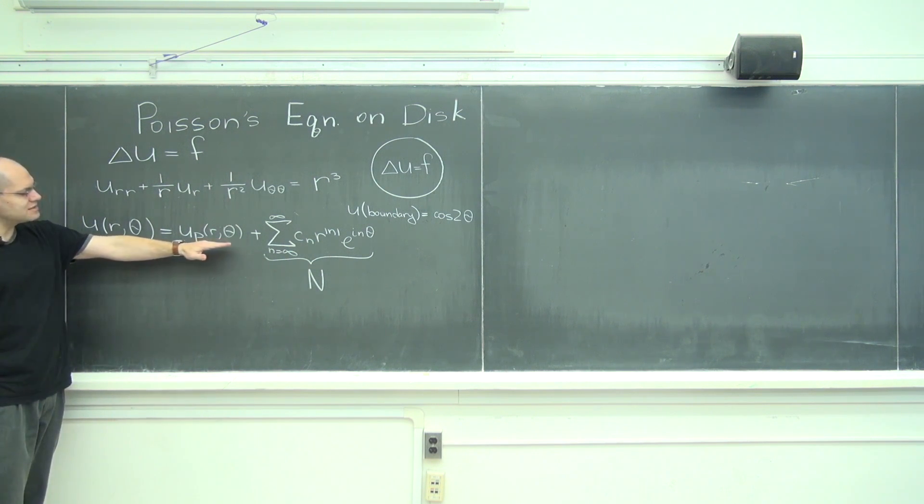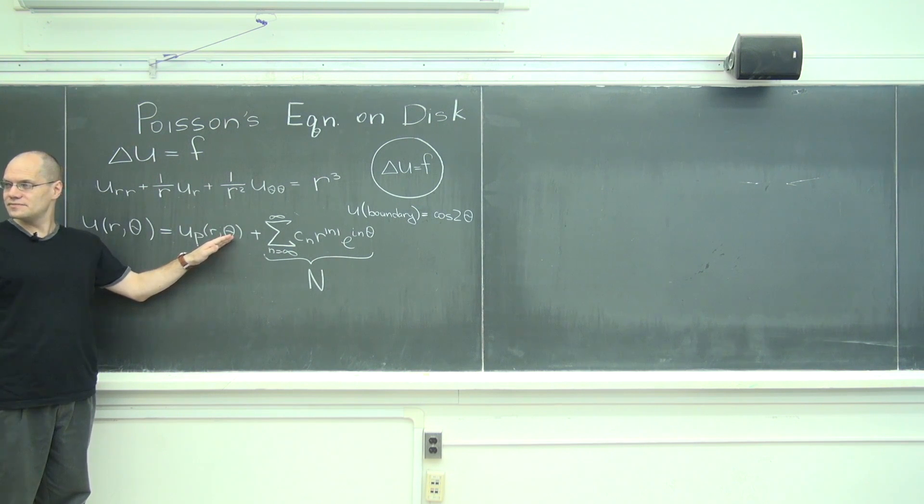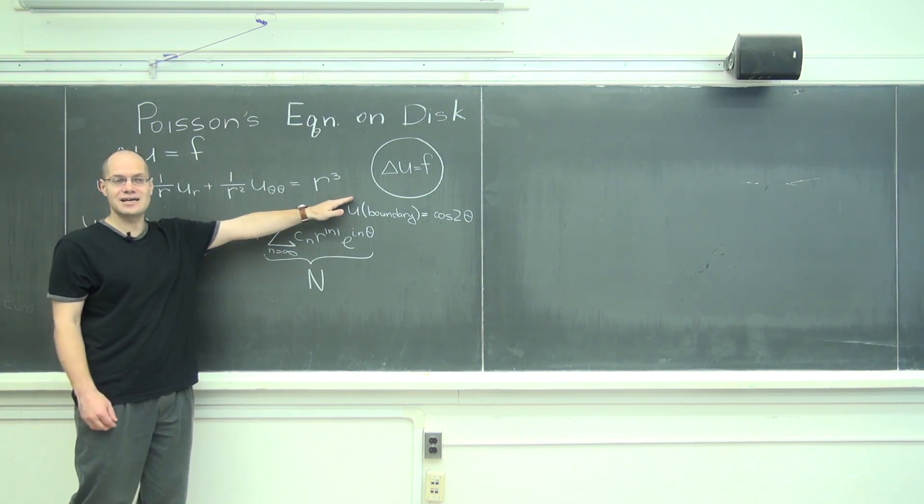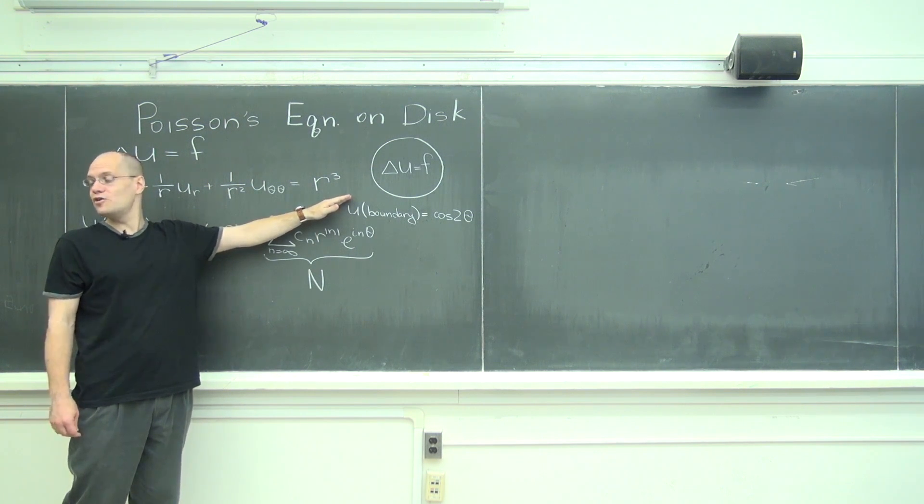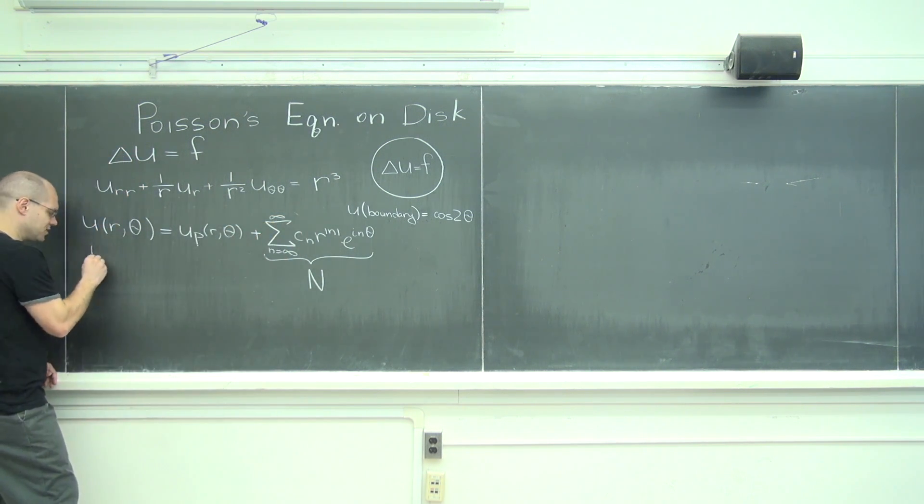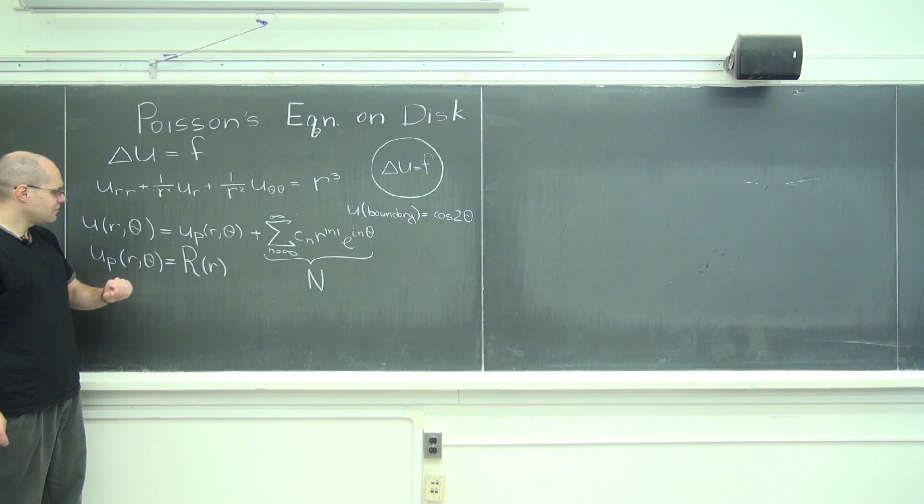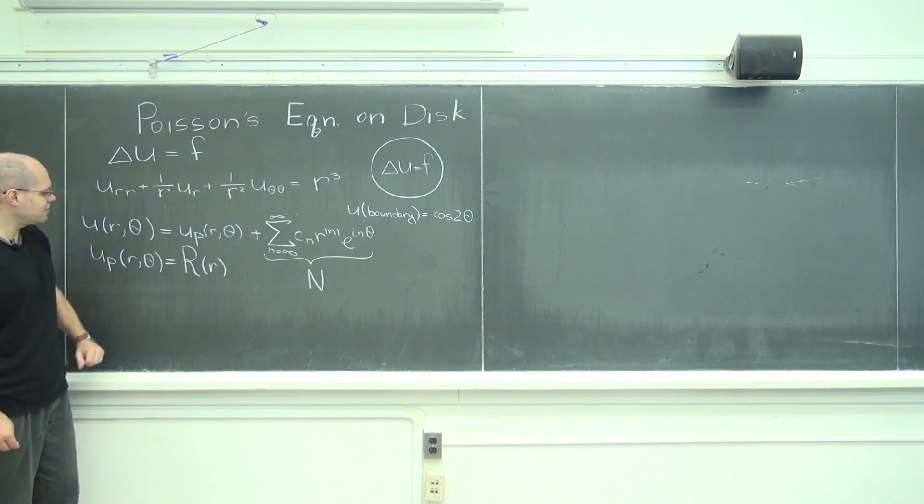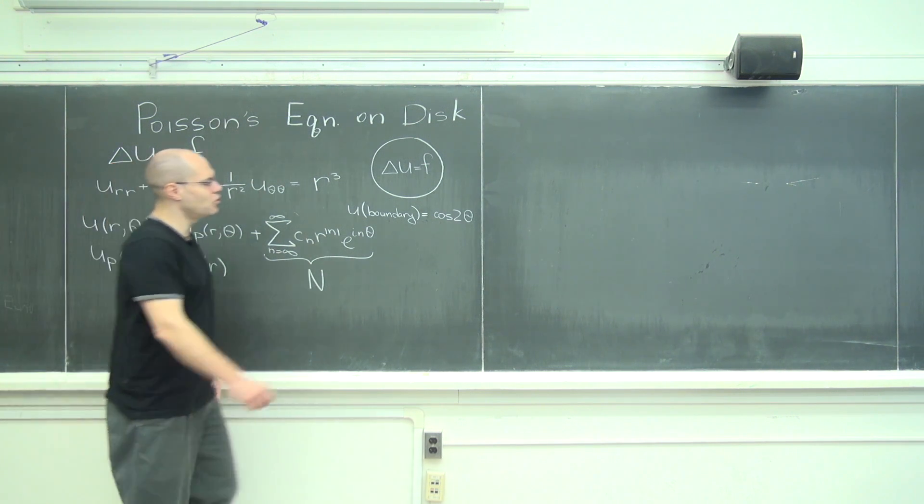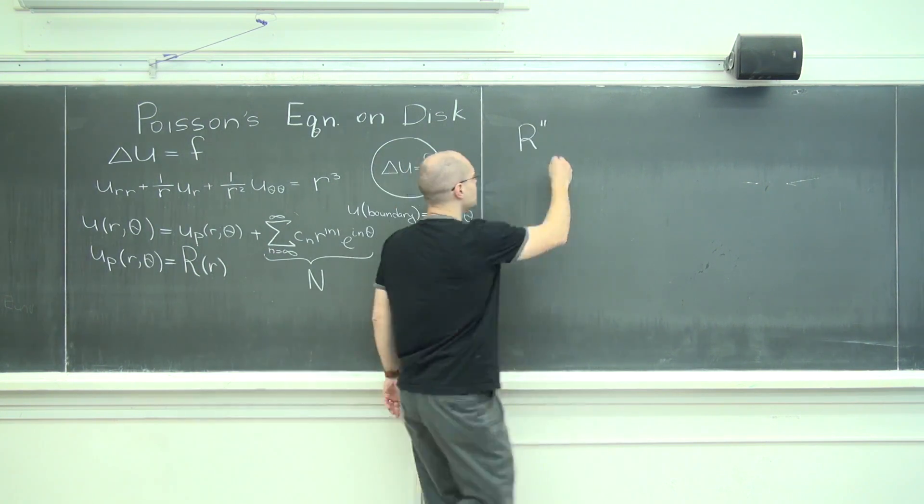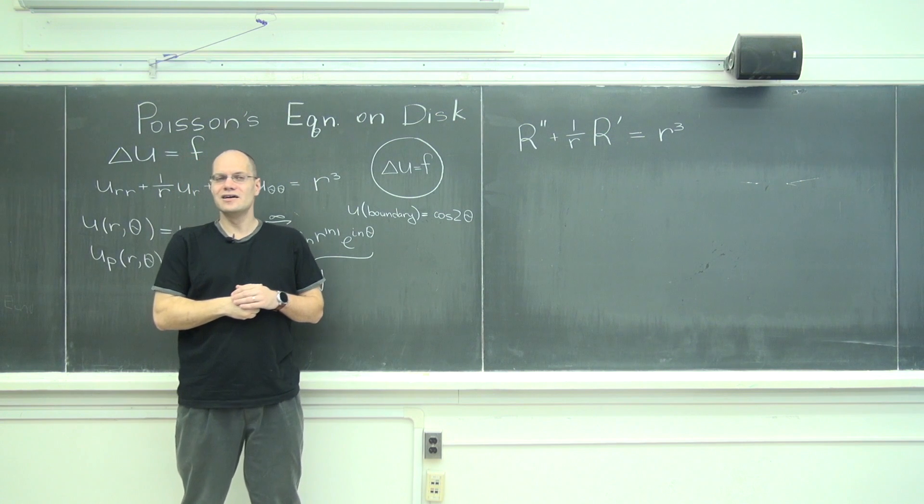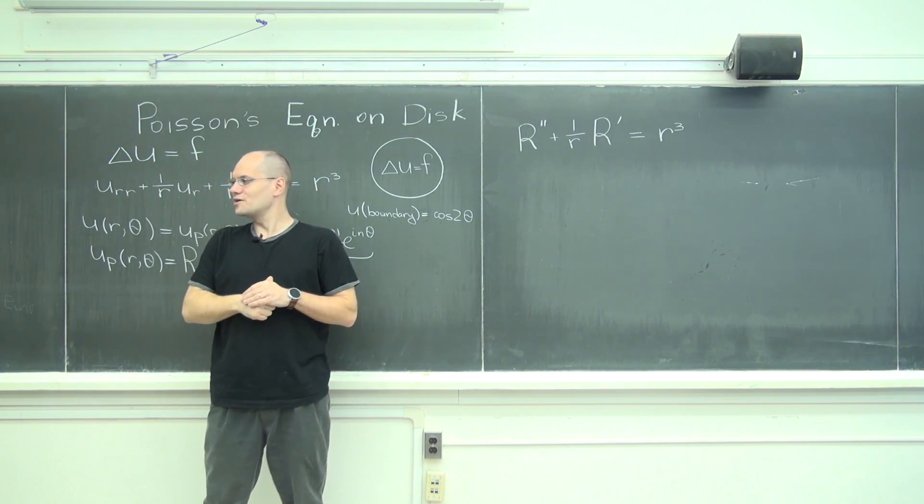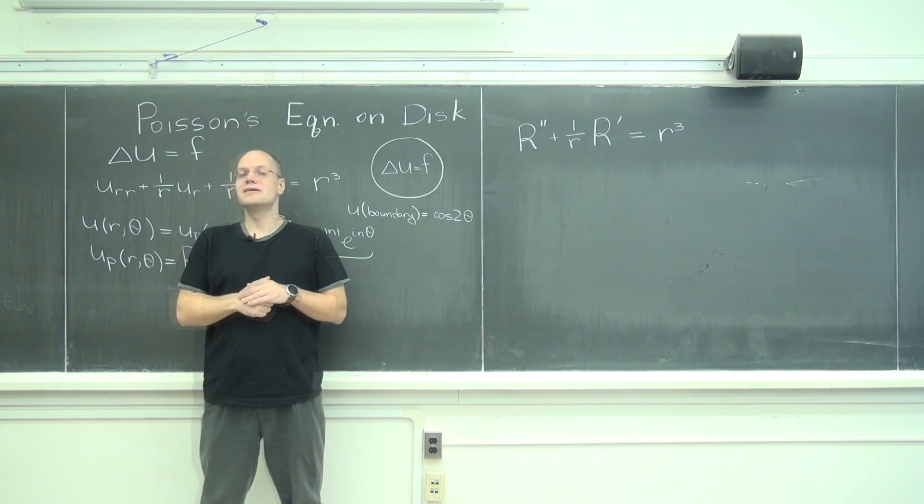Okay, so I'm going to guess that this function right here can be chosen to be just radial. Do you guys agree with that? Because the right-hand side is radial, so I'll just look for capital R of r. And if we plug this in here, then we're getting the ordinary differential equation. Is it a linear ordinary differential equation?